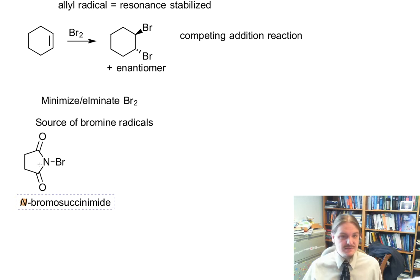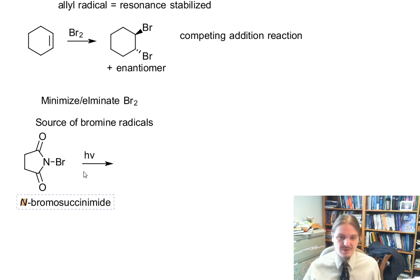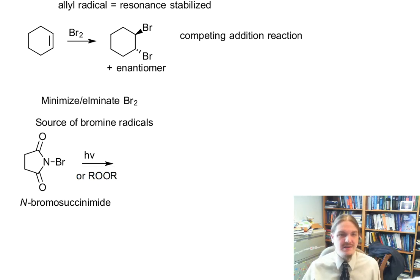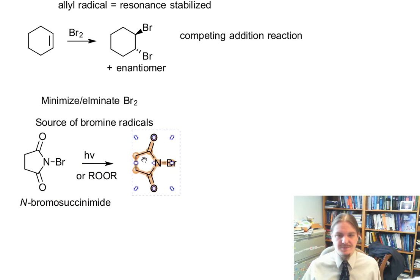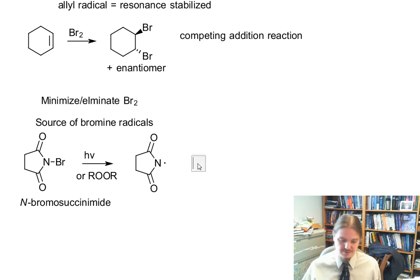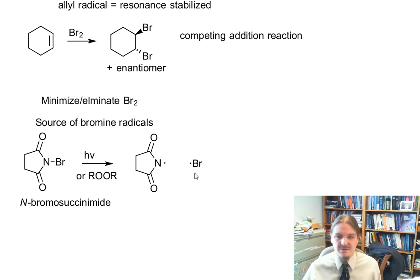N-bromosuccinimide happens to be a source of bromine radicals. It can undergo homolytic cleavage, or it can be activated by an initiator, to produce bromine radicals and succinimide radicals. And therefore we're no longer dealing with things that produce electrophilic bromine.